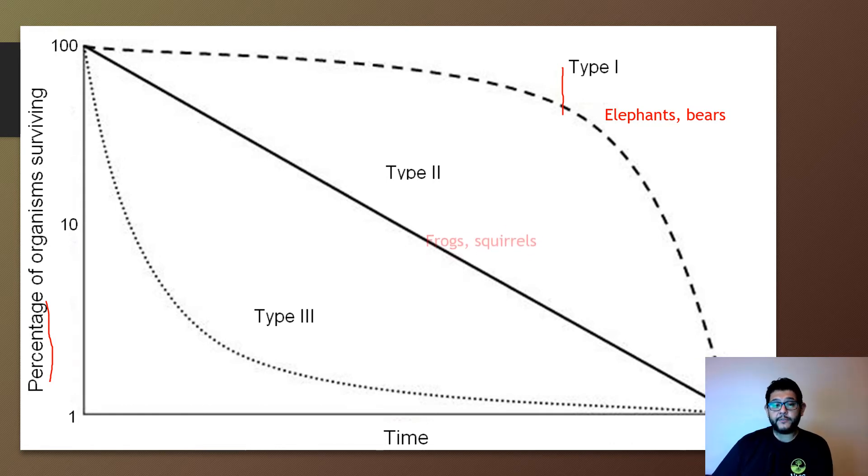But then you can also have Type II and those would be like a frog or a squirrel. Those you can have pretty much loss at any level on the line. So not many of them make it to old age, but they still have a good percentage making it all the way.